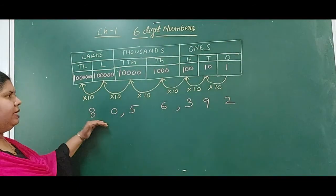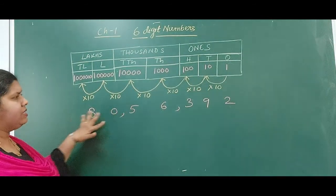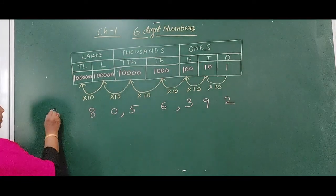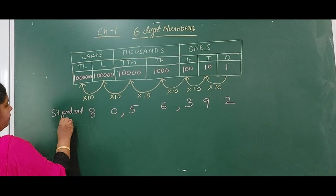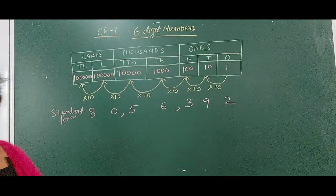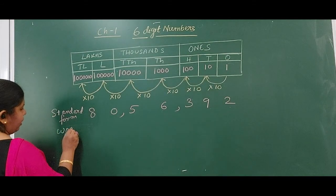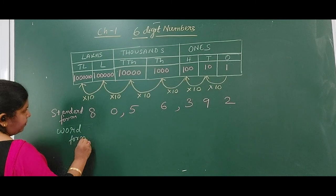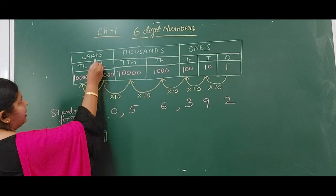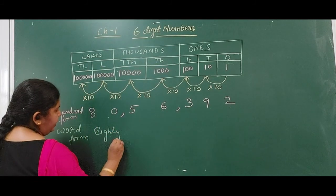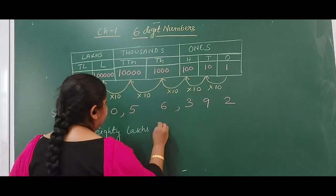Now you can easily write down this number in word form — this is the standard form of the number. When we write it in word form, we can write 80 lakhs — because 8 and 0 come under the lakhs period — so 80 lakhs, 56 thousands.